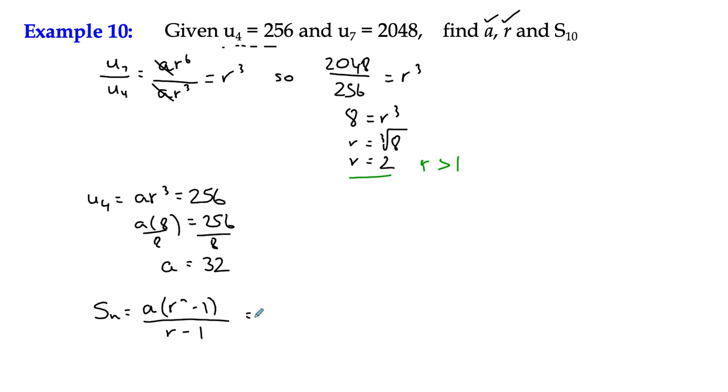We've got Sn equals that. So let's do S10. a is 32, r is 2, and we're looking for S10. That's 32 times 2 to the power 10 minus 1, all over r minus 1, which is 1.